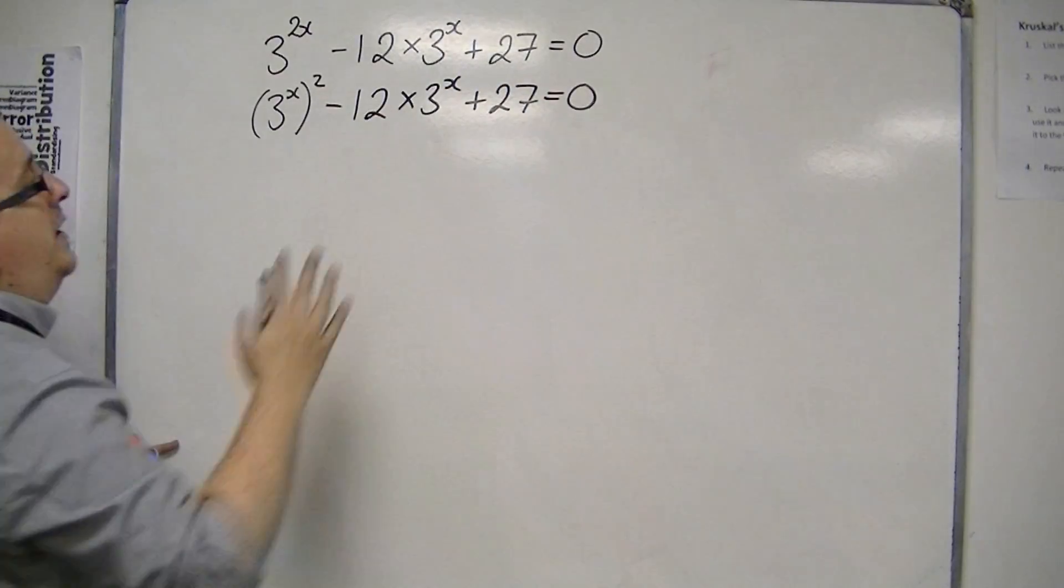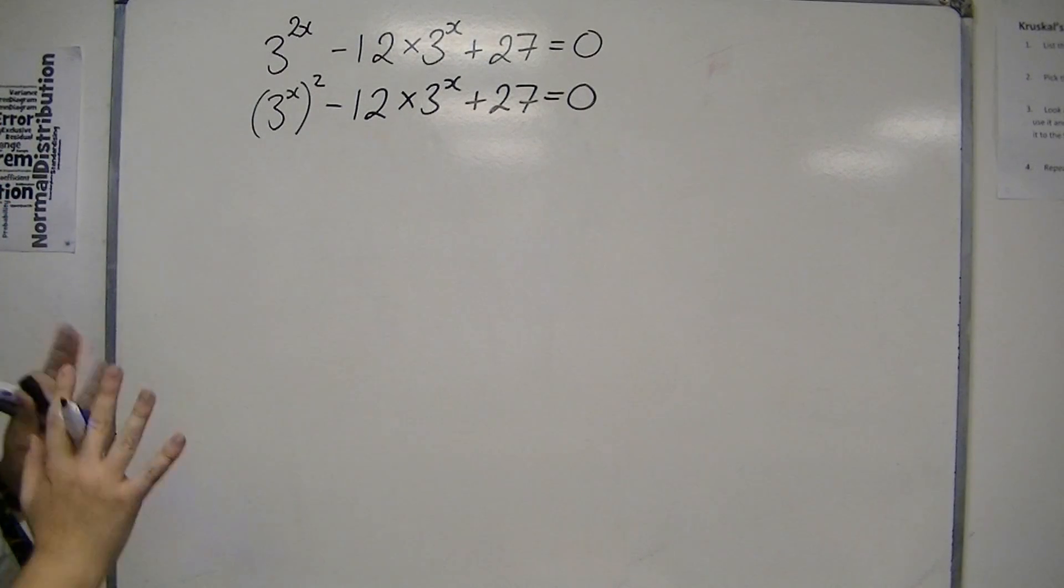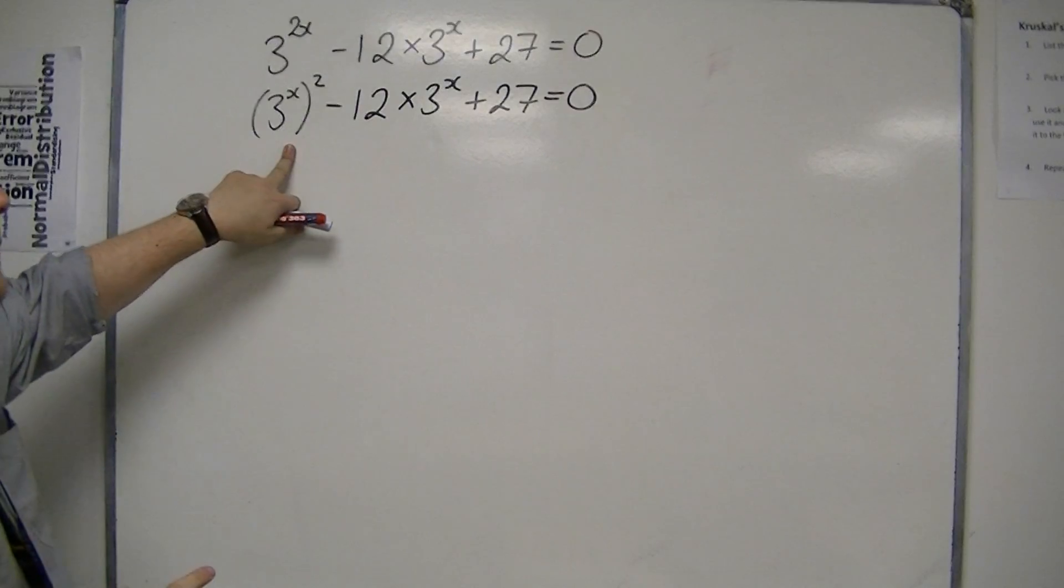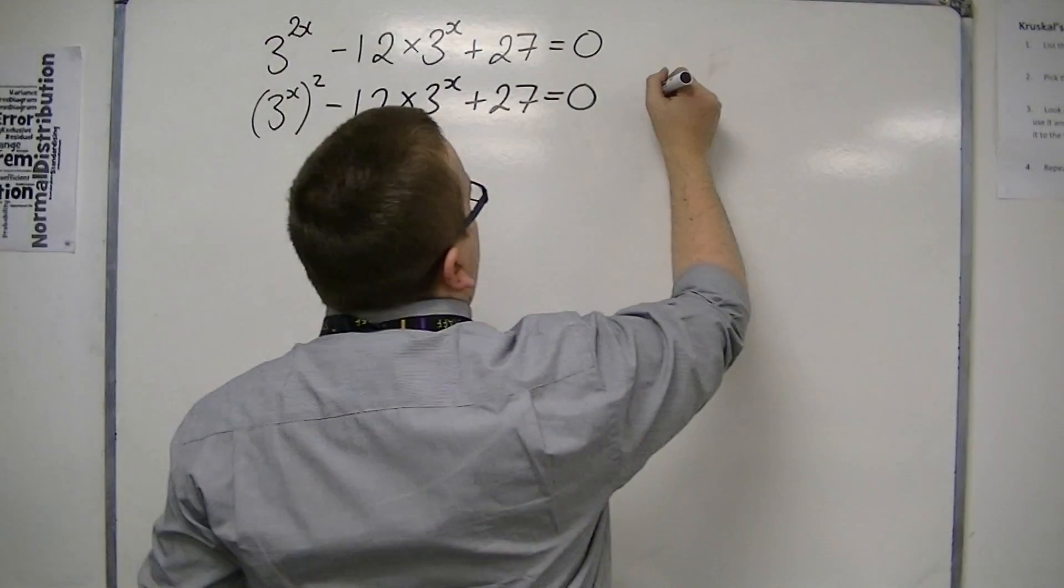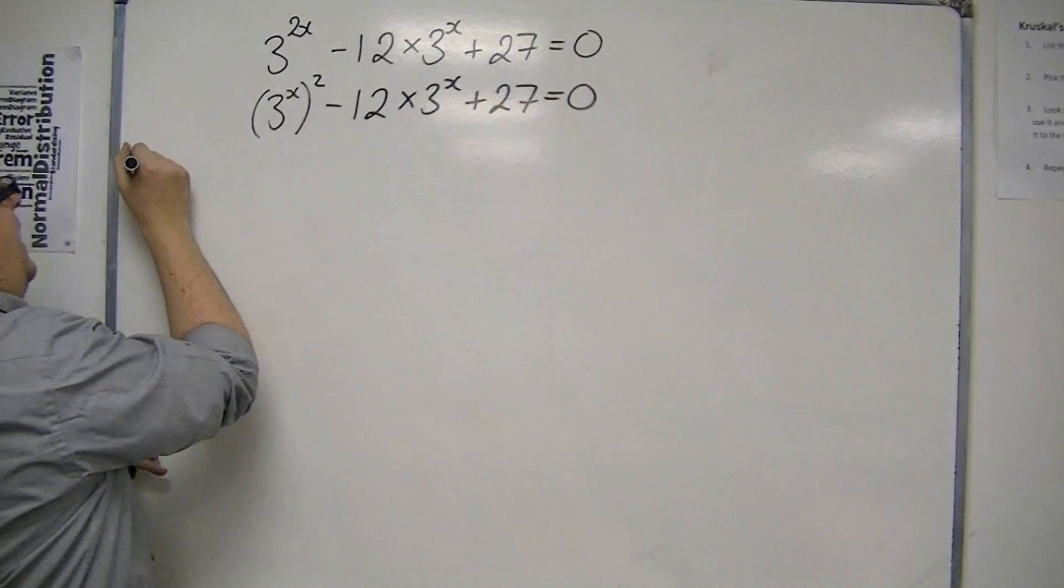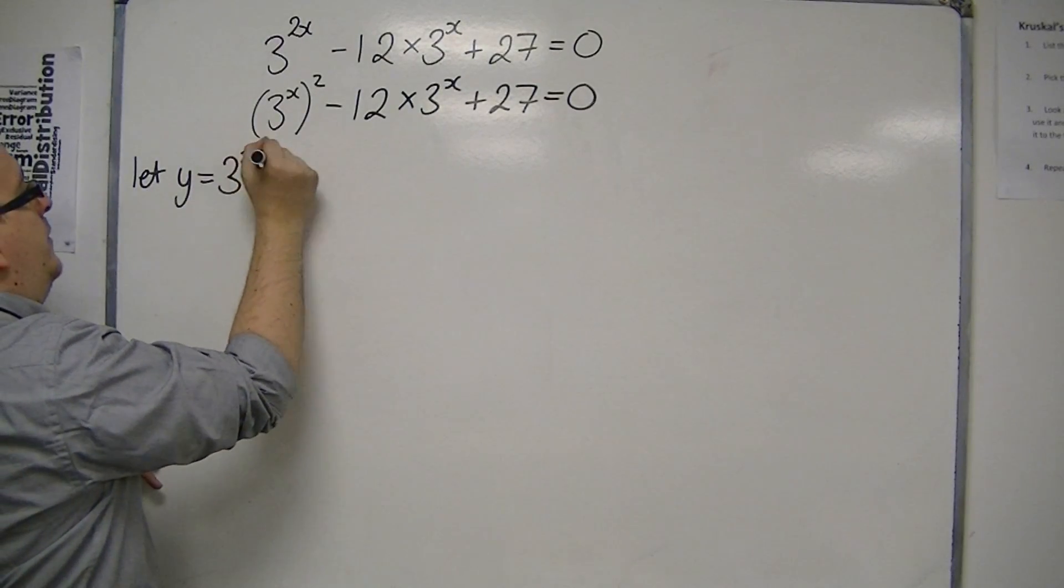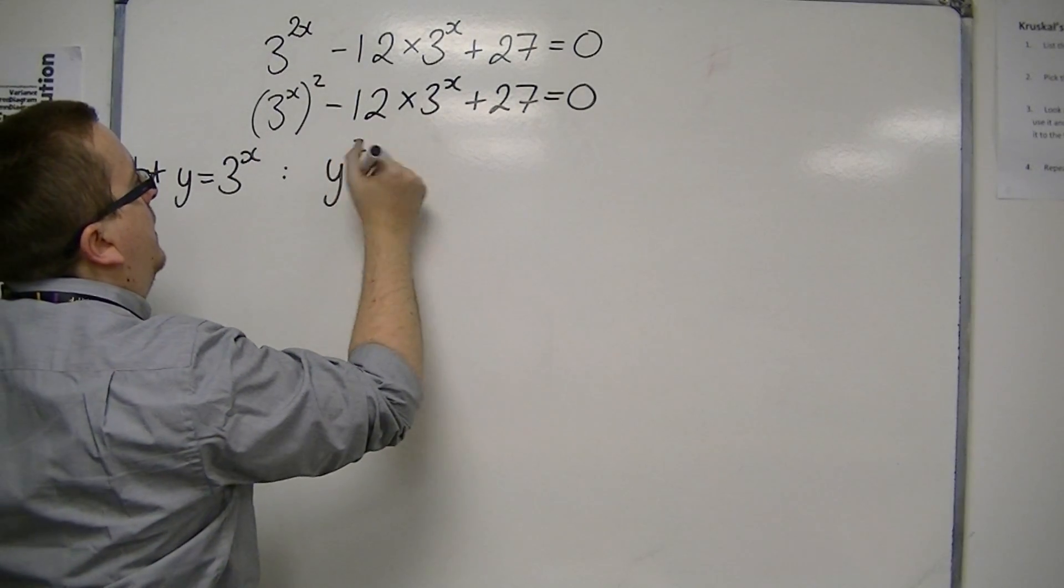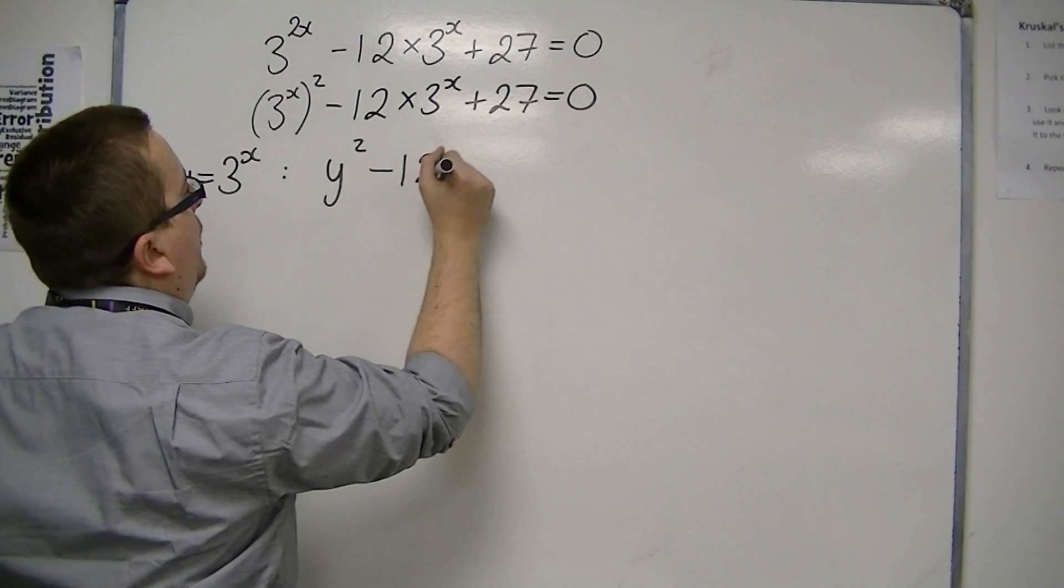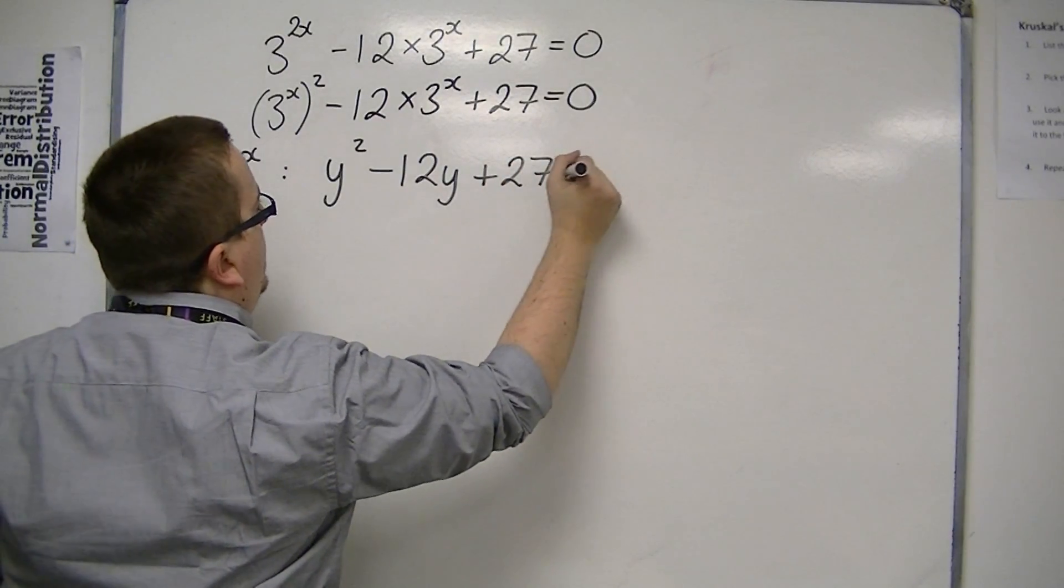I've left the rest exactly the same. Now, if you replace and make a substitution, replace the 3 to the x with y, so let y equal 3 to the x, then I've got y squared take away 12 lots of y plus 27 is 0.